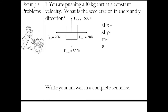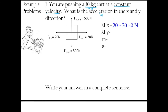Example problem: you are pushing a 10 kilogram cart at a constant velocity. What is the acceleration in the x and y direction? Constant velocity means there is actually no acceleration. We have force normal up at 500 newtons, force gravity down at 500 newtons, force applied right at 20 newtons, and force friction left at 20 newtons. Net force in the x direction: 20 minus 20 equals 0 newtons.